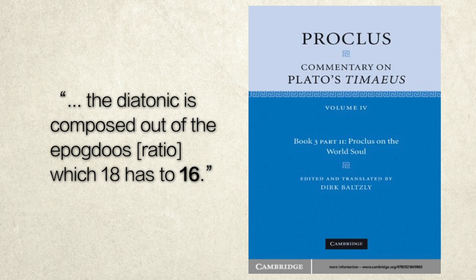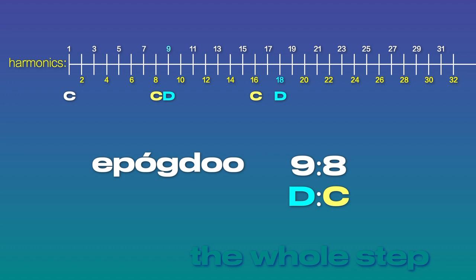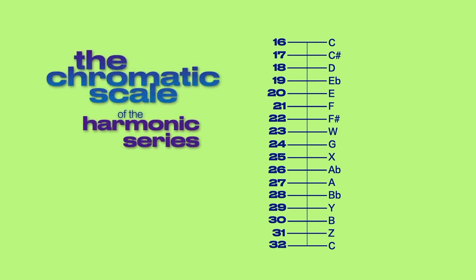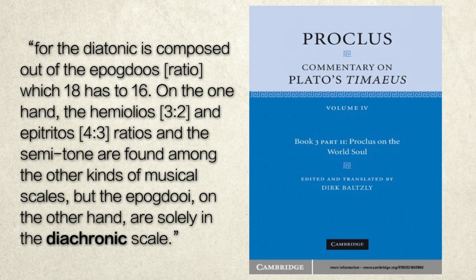The diatonic is composed out of the apogdo ratio, which 18 has to 16. Here Proclus has scaled up the apogdo from 9 to 8 to its octave at 18 to 16. The fact that Proclus scales 9 to 8 up to 18 to 16 suggests he's perceiving the octave not as partitioned into 8 notes as a diatonic scale, but into 16 as a chromatic scale, of which C is the tonic. And he explicitly states this in his Timaeus Commentary. For the diatonic is composed out of the apogdo ratio, which 18 has to 16. On the one hand, the hemiola and epitritos ratios and the semitone are found among the other kinds of musical scales, but the apogdo, on the other hand, are solely in the diachronic scale.